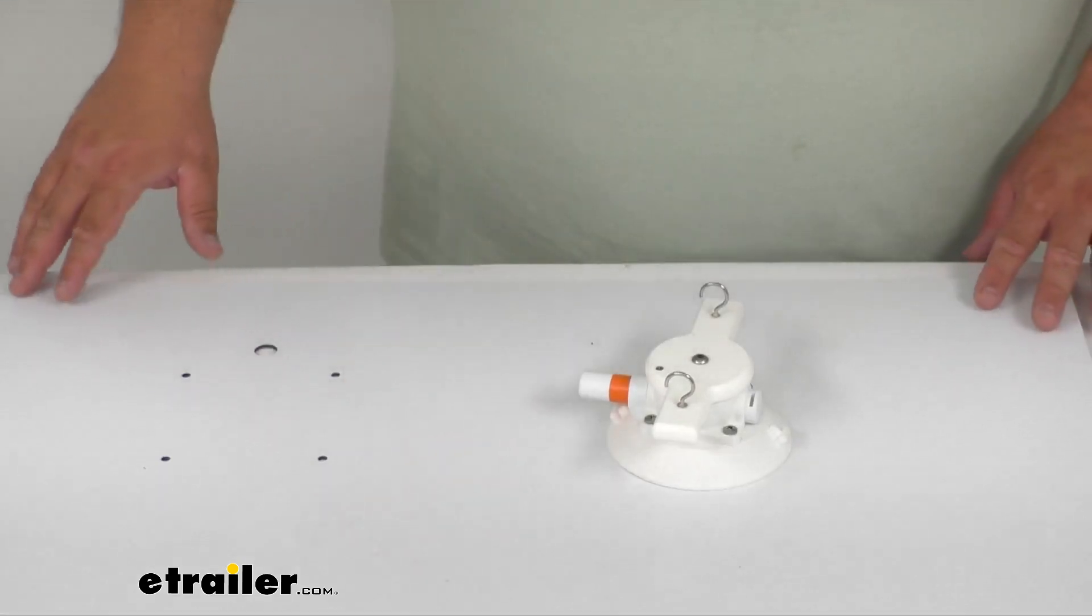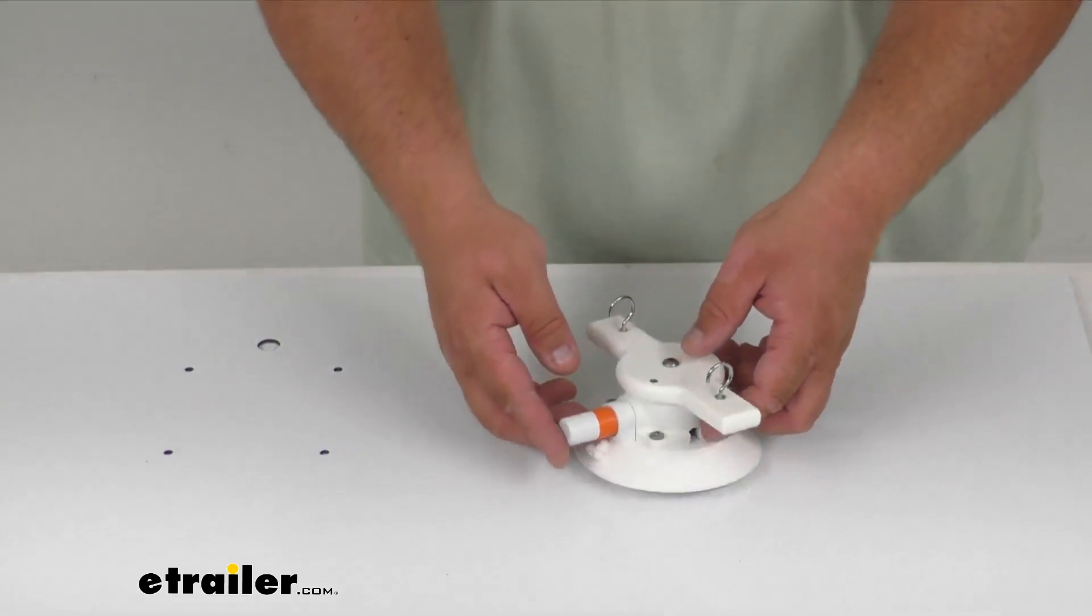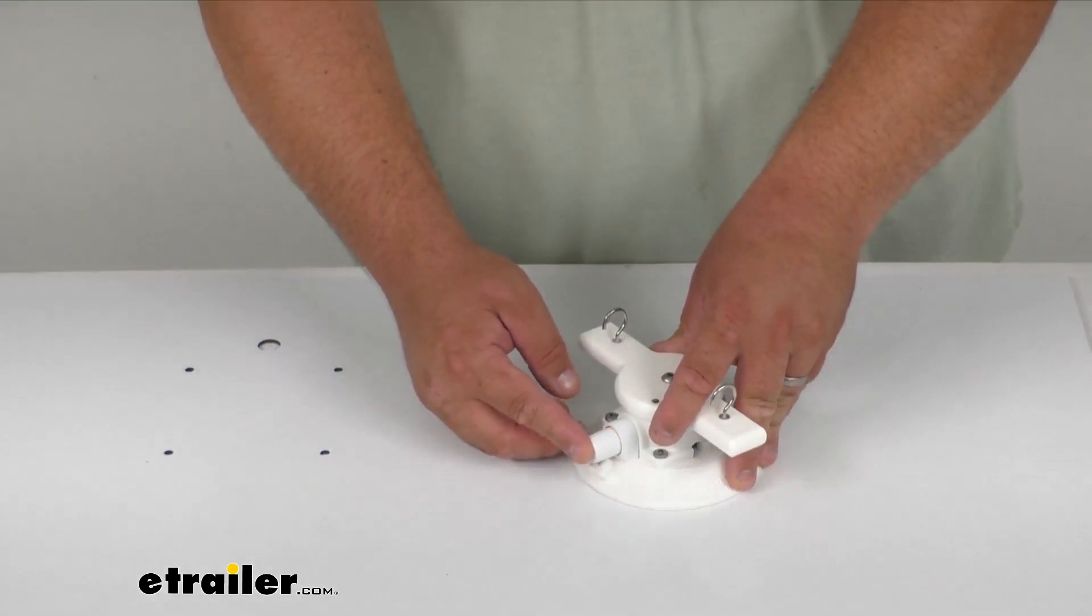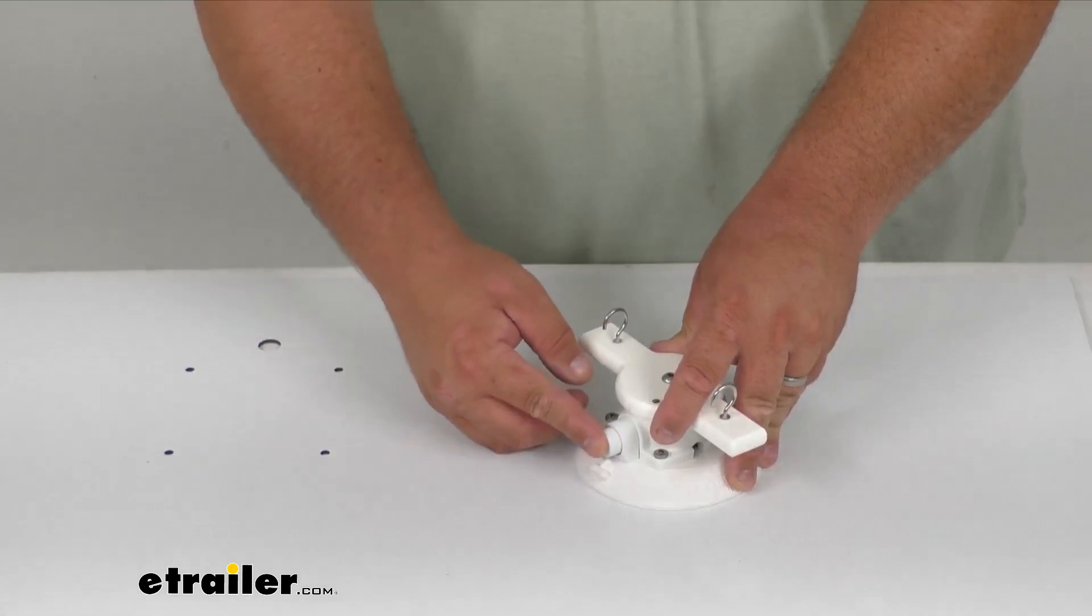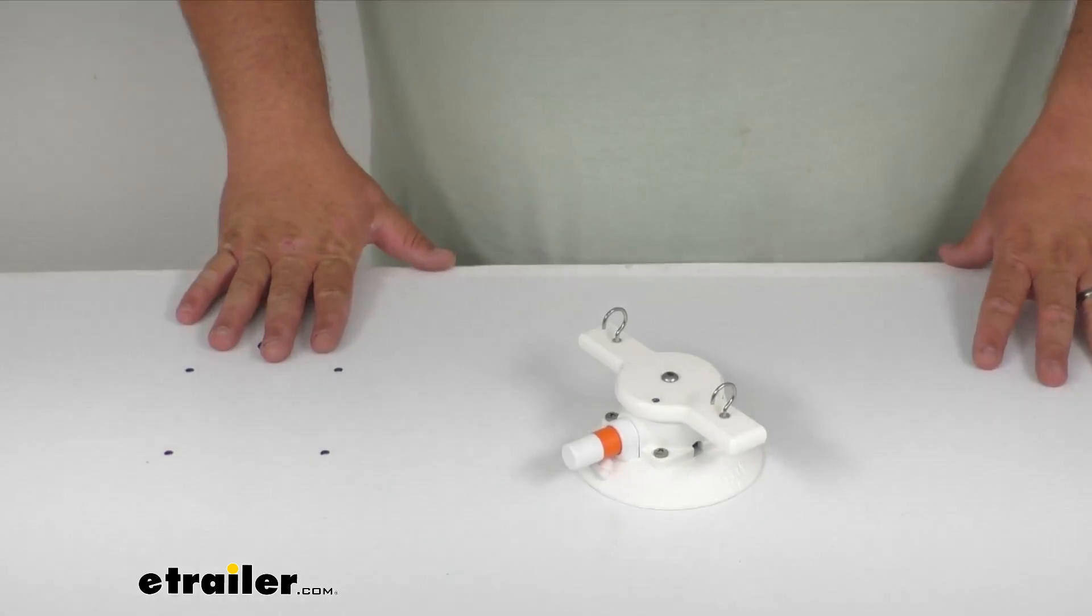You can attach it to metal, fiberglass, glass, anything like that, and you simply just pump it down like I showed you. If you've been using it for a while and you see a little orange, just pump it back up until the orange disappears, and that'll vacuum out whatever little air slowly got back behind there.